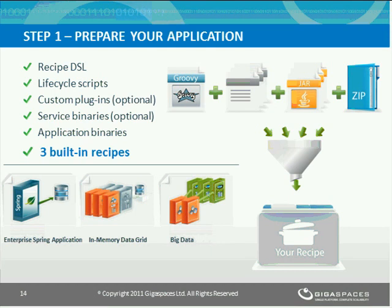In our case, Tomcat and Cassandra are already pre-located within the Azure environment since we won't change them every time we deploy a new version. To help you further, the Cloudify environment comes with pre-canned recipes that you can always customize. These include the Enterprise Spring application recipe used in this demonstration, a caching service recipe, and a database recipe. Even when you need to make changes to a recipe or create one yourself, that is usually a single step you do once for all applications.